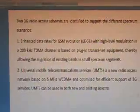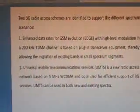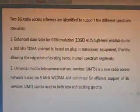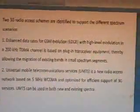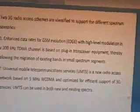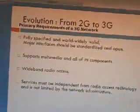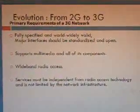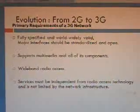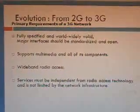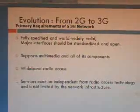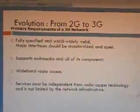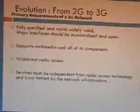UMTS — Universal Mobile Telecommunication Services — is a new radio access network based upon 5 MHz WCDMA, optimized for efficient support of 3G services. UMTS can be used in both new and existing sites. The primary requirements of 3G networks are fully specified and worldwide valid; major interfaces should be standardized and open, supporting multimedia, wideband radio access, with services independent from radio access technologies.